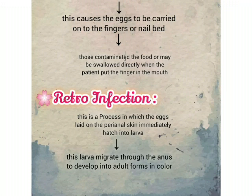Retro-infection: this is a process in which eggs laid on the perianal skin immediately hatch into larvae. These larvae then migrate through the anus to develop into adult form in the colon.